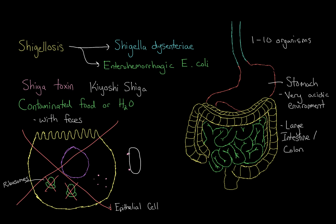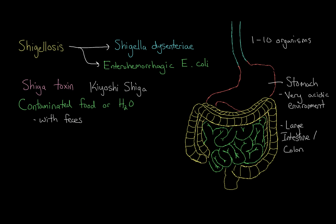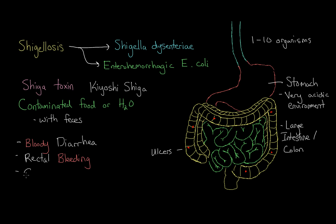Because the ribosomes can't produce proteins, the epithelial cell will subsequently die off. So you no longer have these epithelial cells available to absorb water. As a result, you may start to see ulcers forming on the wall of the large intestine. People may also experience bloody diarrhea, rectal bleeding, and cramps due to the inability to absorb water. People may also experience tenesmus, which is a consistent sensation that you need to evacuate your bowels even when your bowels are empty.